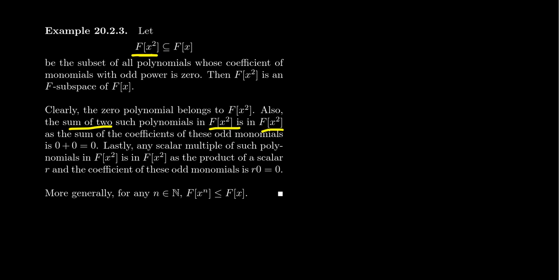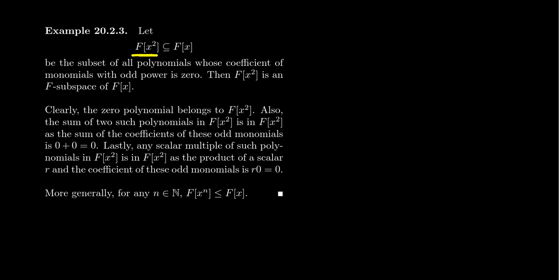Why is the sum of two polynomials from F[x²] also in F[x²]? Look at the coefficients of the odd-degree monomials: for x, one polynomial has coefficient zero and the other has coefficient zero, so their sum is zero. Likewise for x³ and all odd monomials. For closure under scalar multiplication, if you take a polynomial in F[x²] and multiply by a scalar r, the coefficient of odd monomials becomes r times zero, which is still zero.